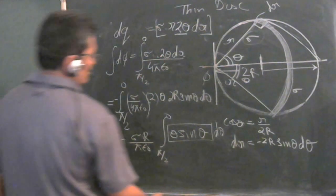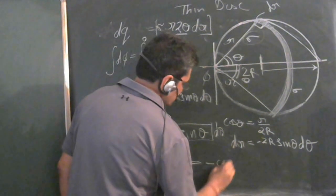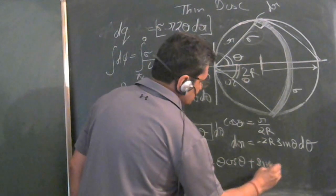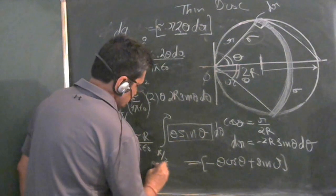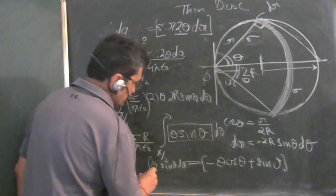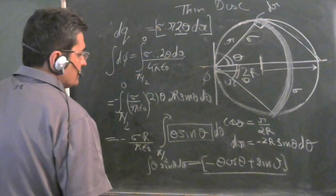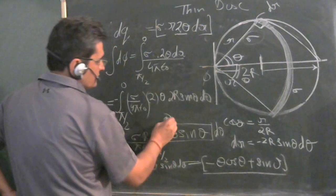We can integrate this in parts and this will give us minus theta cos theta plus sine theta. That is the integral of theta sin theta d theta. If you integrate by parts you will get minus theta cos theta like this.